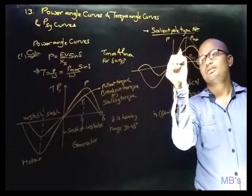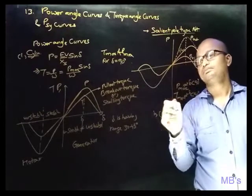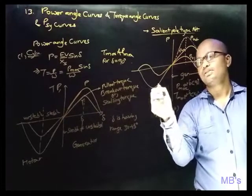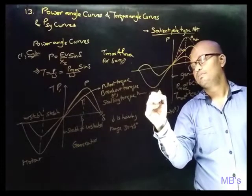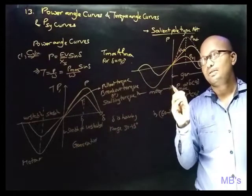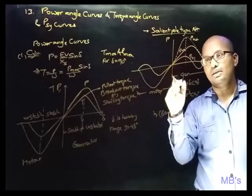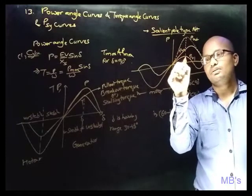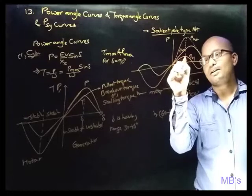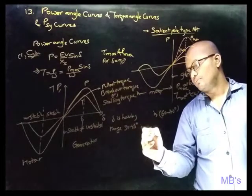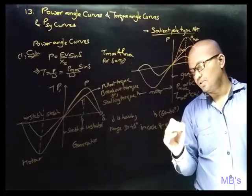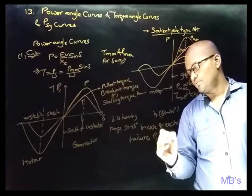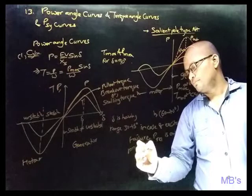The total output power consists of reluctance power and electromagnetic power. The stable region is up to the peak and the unstable region is beyond. In case of excitation failure for the salient pole alternator, the electromagnetic power component is absent and only reluctance power remains. In this case, T_max and P_max occur at δ equals 45 degrees.